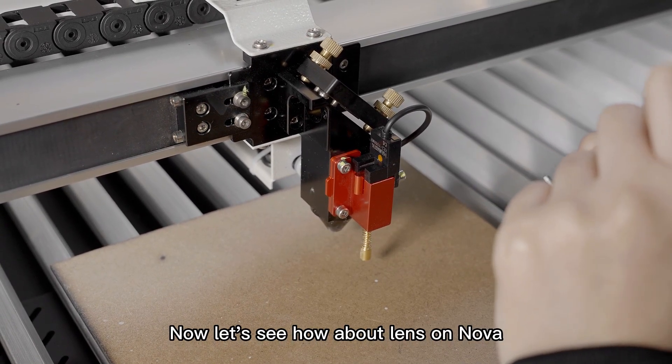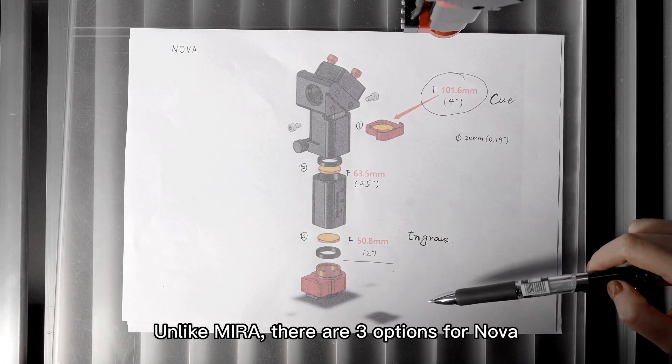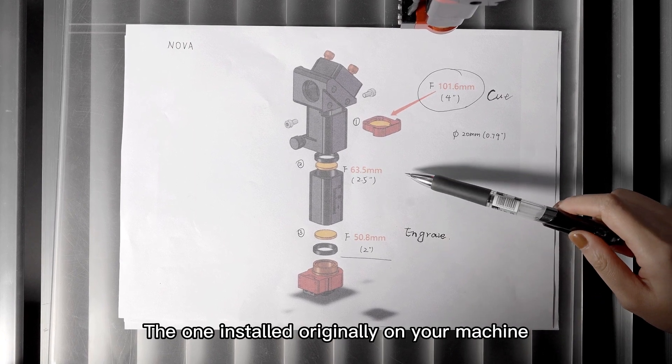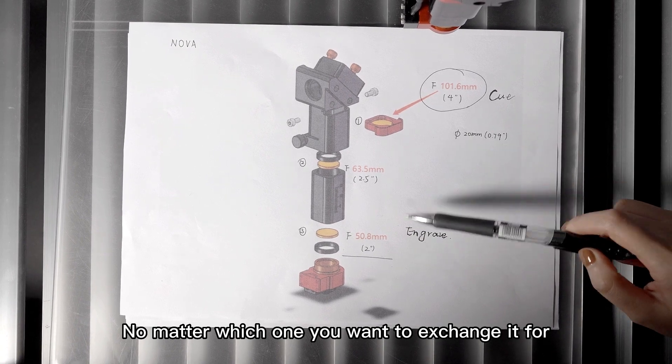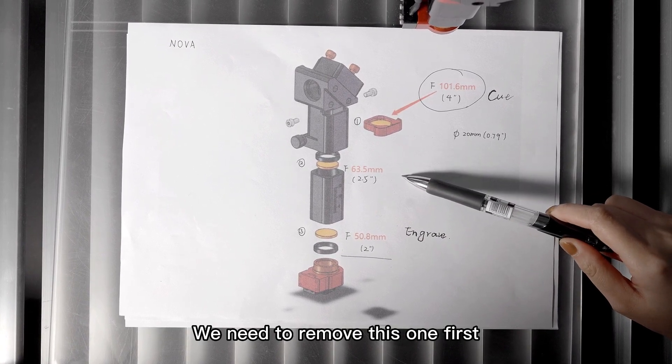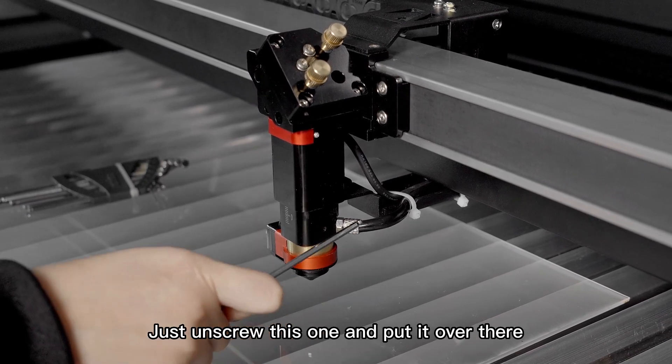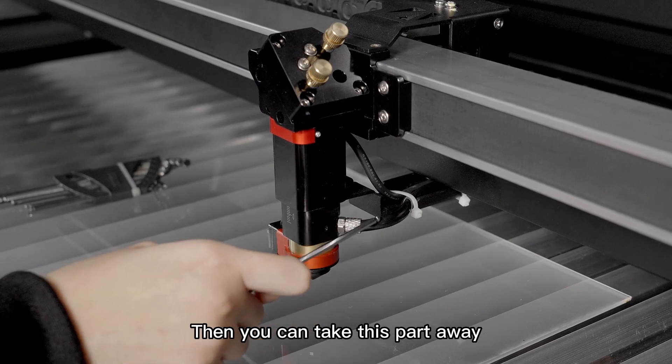Now let's see how about lens on Nova. Unlike Mira, there are three options for Nova. Each one of them has different focal length. The one installed originally on your machine is the middle one. No matter which one you want to exchange it for, we need to remove this one first. So we need to remove this vent hose part first. Just unscrew this one and put it over there. Then you can take this part away.